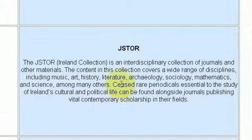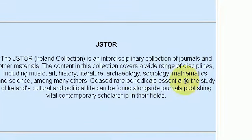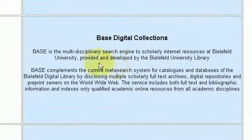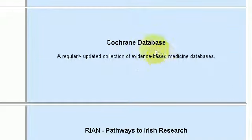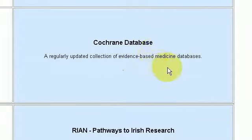Here we have JSTOR, which is quite useful for students studying arts, sociology, mathematics, history and so forth. Then we have the BASE digital collections, which is described as a multi-disciplinary search engine for scholarly research — so that could be a one-stop shop for all of your study needs. And there's the Cochrane database, which is a medicine and biological sciences based online journal.